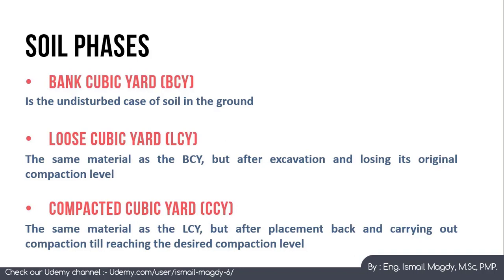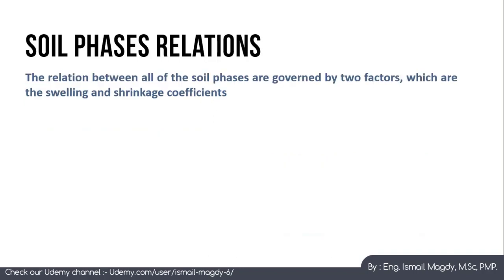We can identify the three phases as follows: first, bank cubic yard — the undisturbed soil in the ground; second, loose cubic yard — the soil after excavation, having lost its natural compaction; third, compacted cubic yard — the soil after placement and full compaction. To understand the relation between these three, we need to understand swelling and shrinkage.